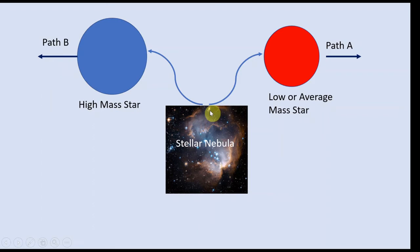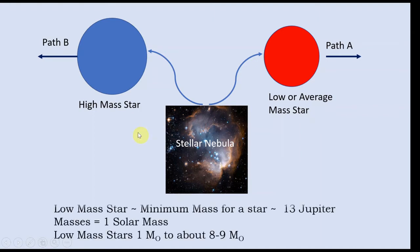In lectures 1, 2, and probably 3, I will be concentrating on the evolution of low mass or average mass stars. A low mass star would mean a star whose mass is typically around 8 to 9 solar masses. There is a certain minimum mass for a star to be formed — roughly about 13 to 14 times the mass of planet Jupiter. Jupiter could have become a star had its mass been at least another 25% more. In astronomy and astrophysics, stellar masses are normally measured in units of solar mass, ranging from around 1 solar mass to around 8 to 9 solar masses for low or average mass stars.